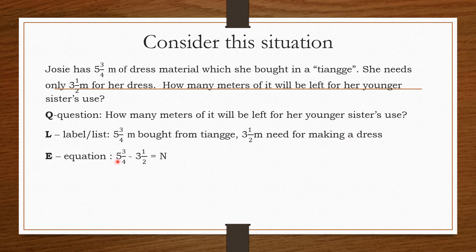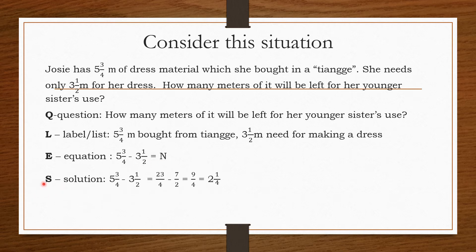Equation: five and three-fourths minus three and one-half equals N. So we have the solution. S stands for solution. Five and three-fourths minus three and one-half equals — okay, so let's transform the mixed numbers into improper fractions. So, five times four equals twenty, plus three equals twenty-three over four. Just copy the denominator. Two times three equals six, plus two equals seven over two — also the denominator.